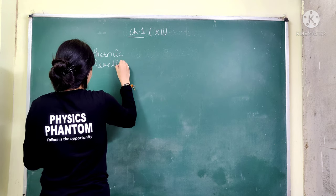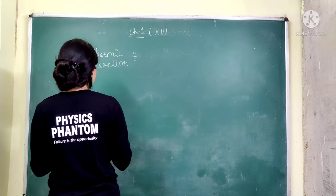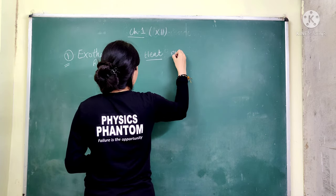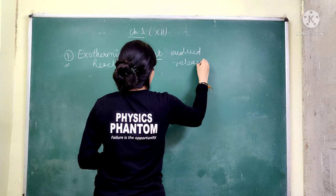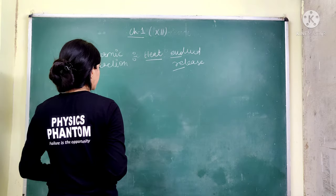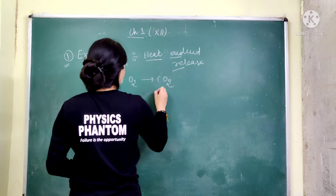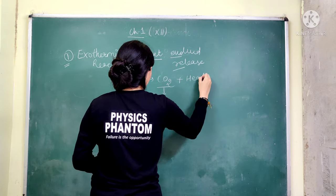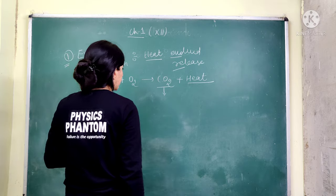Exothermic reaction is very important. In this type of reaction, heat is the main component — heat is evolved or released. Reactions in which heat is released are called Exothermic reactions. For example: C + O₂ → CO₂ + Heat. In this reaction, you can see that heat is produced.